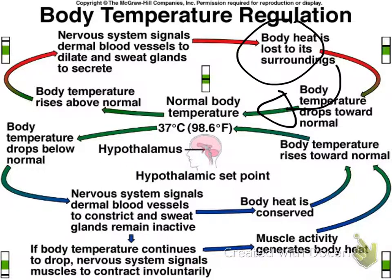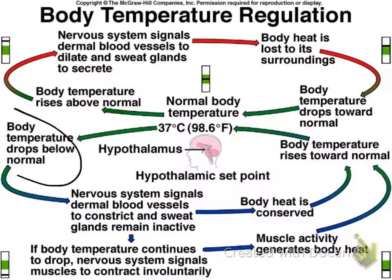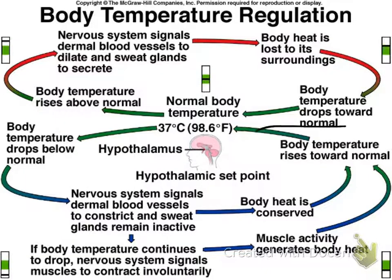When the hypothalamus receives information that body temperature is at normal levels, and then detects that body temperature is dropping, it sends information to the nervous system to constrict the blood vessels and start contracting the muscles very fast to create heat. That allows body temperature to rise back up to its normal state of 98.6 degrees Fahrenheit.